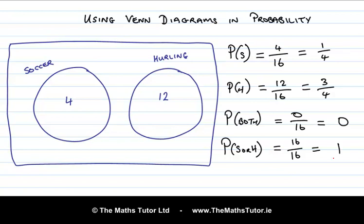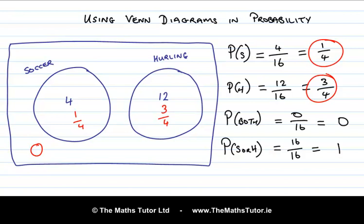We can write the probabilities into the regions of the Venn diagram. The probability of soccer only was a quarter, and the probability of hurling only is 3 quarters. Adding a quarter and 3 quarters gives us 1. The probability of somebody playing neither sport is 0, since there's no one in this group who plays neither. Adding all probabilities — a quarter, 3 quarters, and 0 — gives 1.